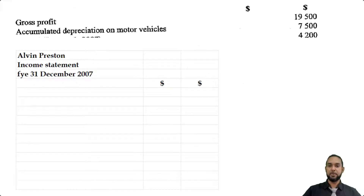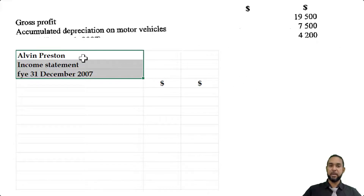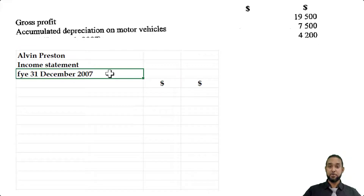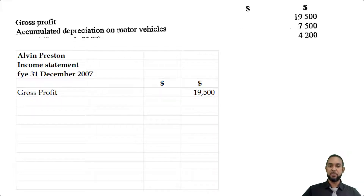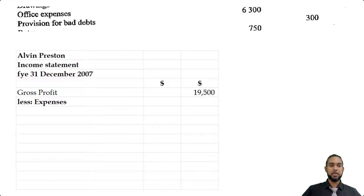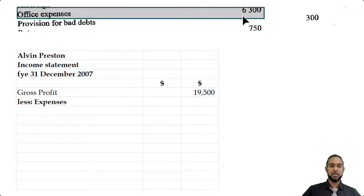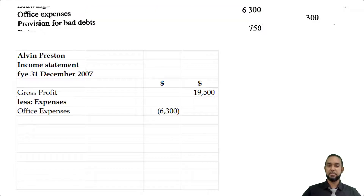Let's pull up the income statement format. Please head it up with name of the entity, name of the statement, and the period to which it applies — FYE is an abbreviation for 'for the year ended.' The first item going into this part of the income statement is gross profit, which is given to us in the trial balance as $19,500. There were no additional revenues, so we go straight to less expenses. The first expense is office expenses — that is $6,300. There were no adjustments to make, no amounts prepaid, no amounts accrued.